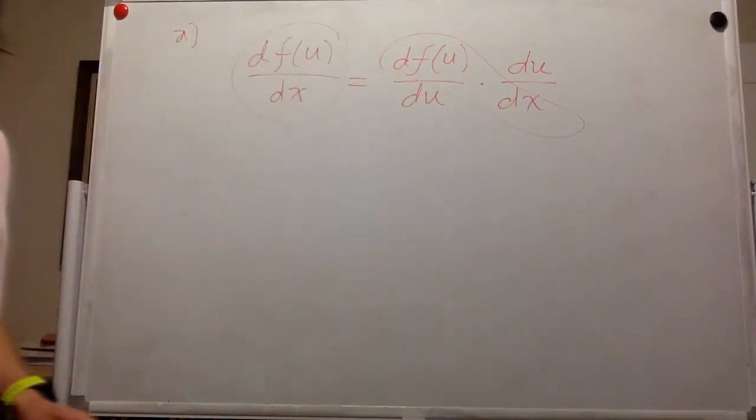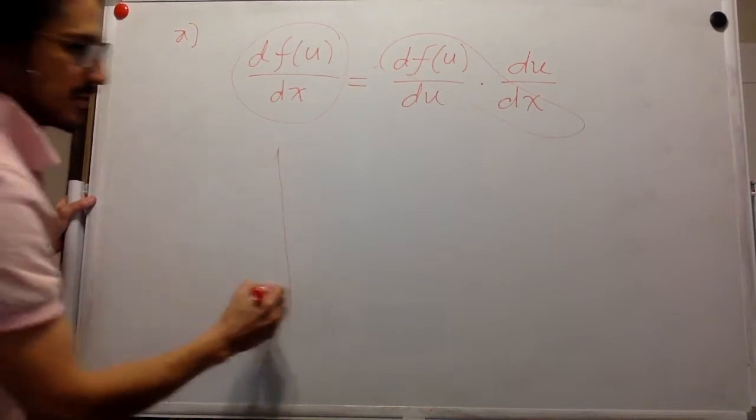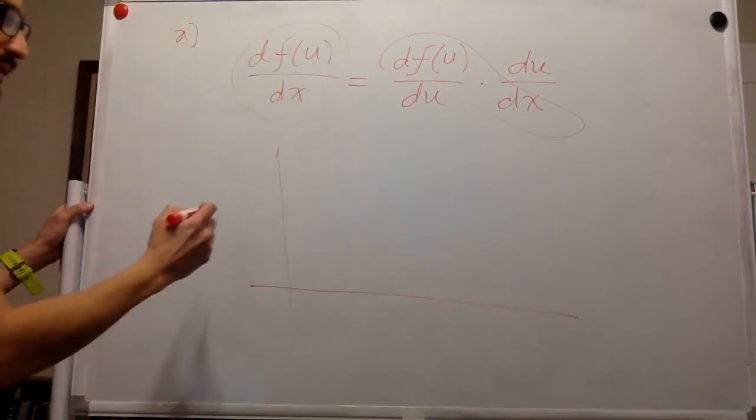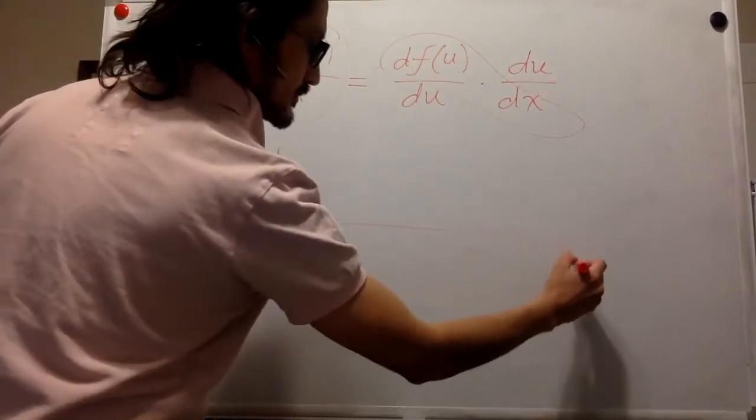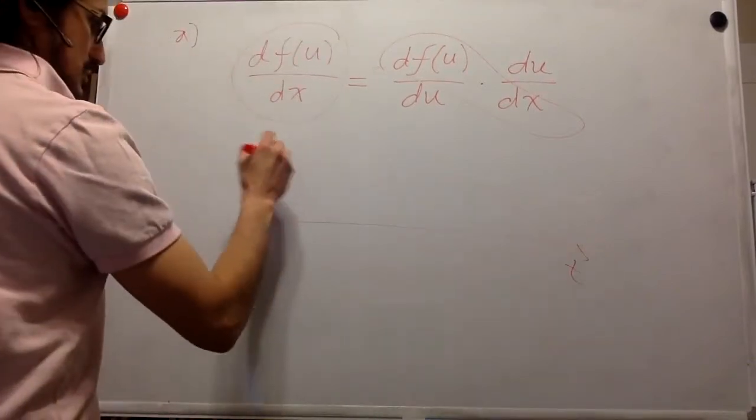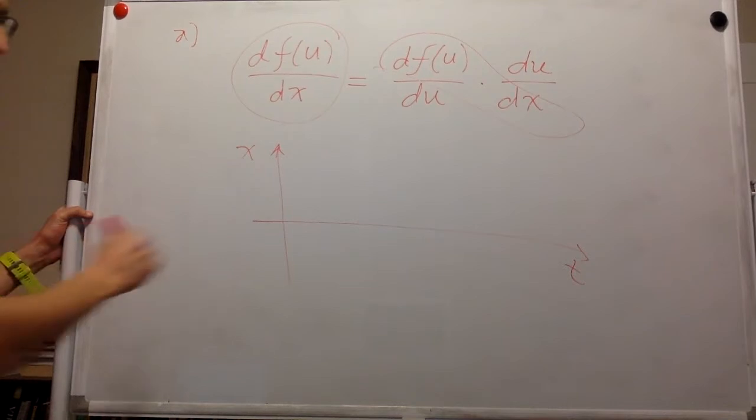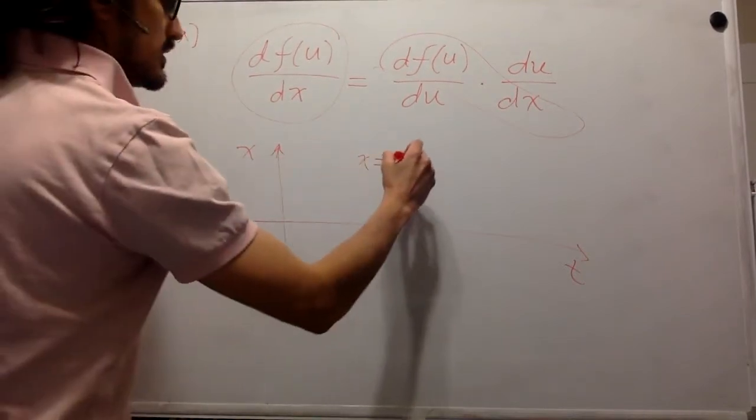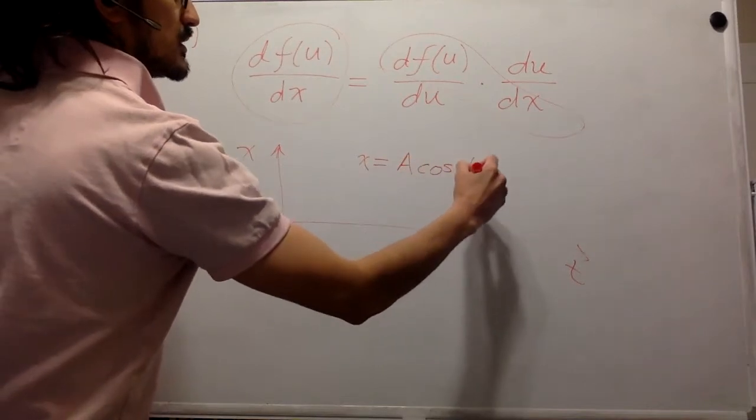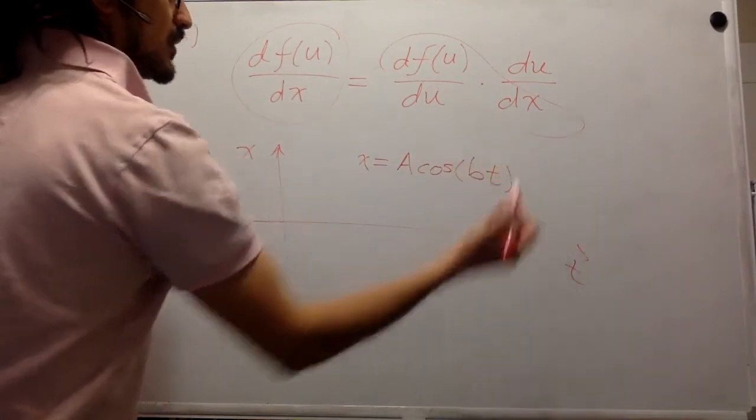For part B, we're going to check this out with an example. So you have an object and you're given a position equation. The position is A cosine of Bt.